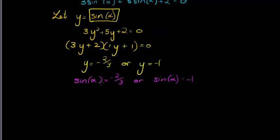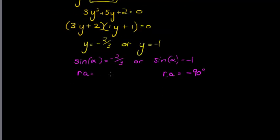Now, I get a reference angle for each one of my answers. For this second one, my reference angle to get negative 1 is negative 90 degrees. Sine of 90 degrees gives me 1. So sine of negative 90 must give me that. Or you could just use your calculator.